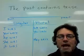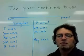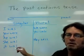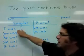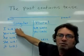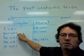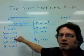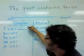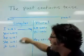To make the past continuous tense, start with the verb be in the past tense. Use was or were, depending on the subject. And then the main verb, followed by -ing.